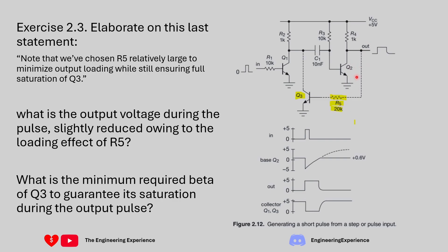The current going down this path is 5 minus 0.7 divided by (R4 plus R5), so 4.3 divided by 21k. You can calculate that current, and then applying Ohm's law on R4 gives you the voltage drop on that resistor — that's your loading effect.